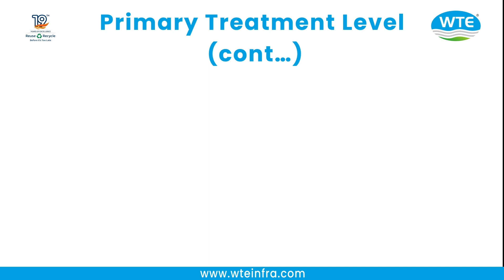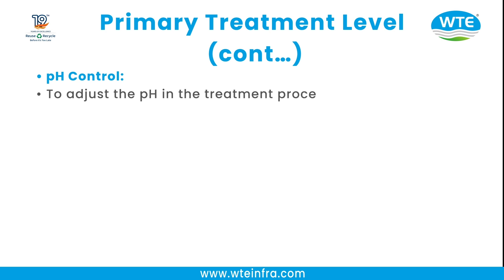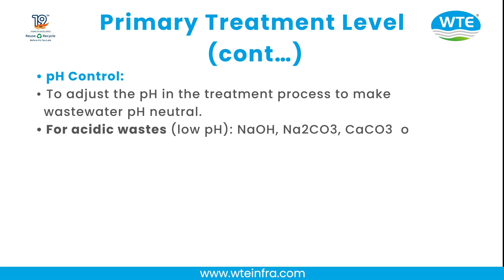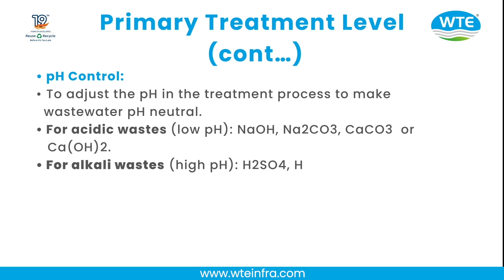pH Control: To adjust the pH in the treatment process and make the wastewater pH neutral. For acidic waste (low pH), chemicals such as NaOH, Na2CO3, CaCO3, or Ca(OH)2 are used. For alkaline waste (high pH), H2SO4 or HCl are used.